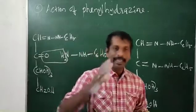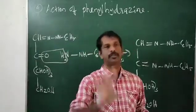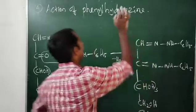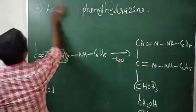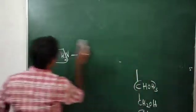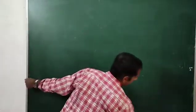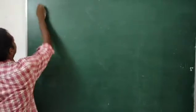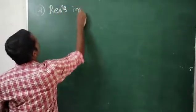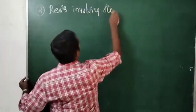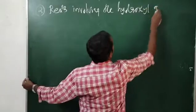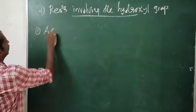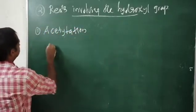Now the second reaction: reactions involving the hydroxyl group present in the glucose. The other four reactions involved the aldehyde group. Now we look at the hydroxyl group. First one is acetylation.